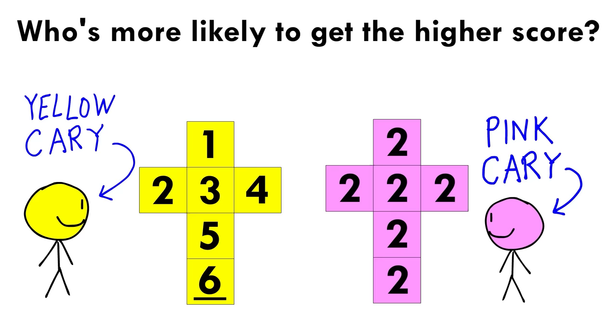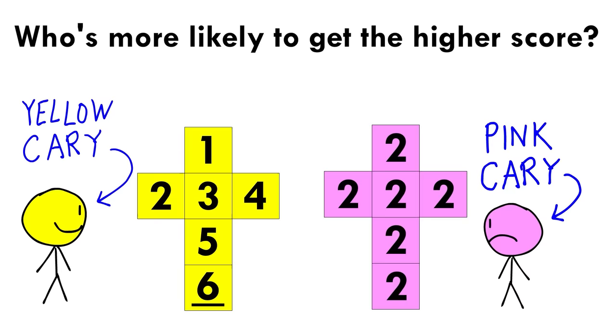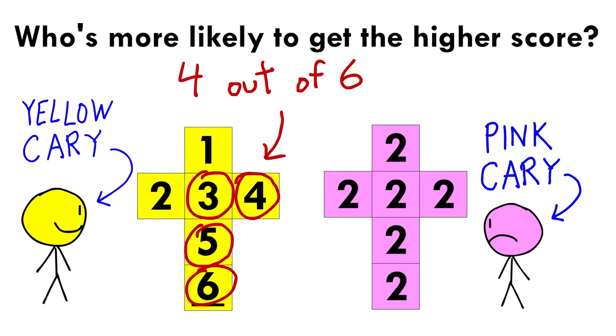Obviously Yellow Kari, because that mother f***er rigged this game against me. Mathematically speaking, Yellow Kari will win 4 out of 6 times, right? Because there's a 4 out of 6 chance Yellow Kari rolls a 3 or higher.